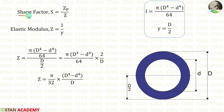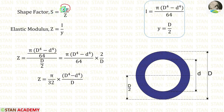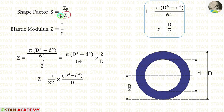We know the formula for the shape factor: S is equal to Zp by Z. Zp is the plastic modulus and Z is the elastic modulus. First, let us calculate the elastic modulus.